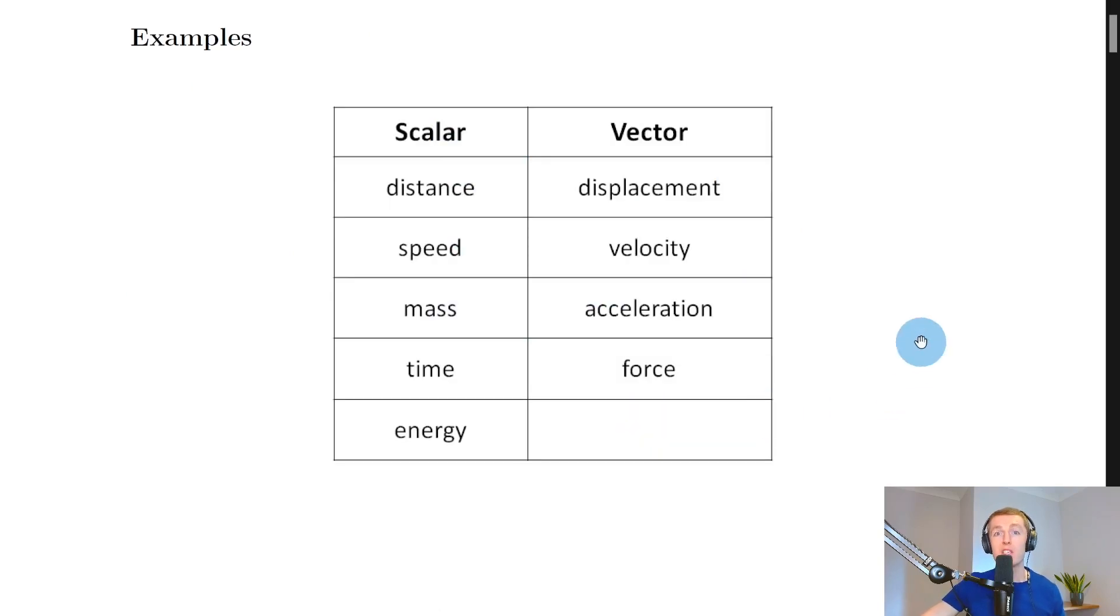And some examples that you need to be familiar with in National 5 Physics are these ones here. And you can see the breakdown of scalars on the left and vectors on the right. So for scalars, remember, these are things that only require a magnitude and not a direction, whereas vectors do require both a magnitude and a direction.